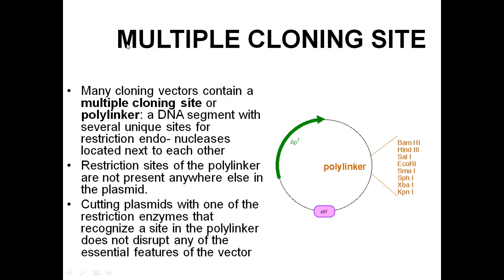Multiple cloning sites are a necessity for the plasmid carrier. The plasmid contains the ampicillin resistance gene, origin of replication, and the multiple cloning site — also called polylinker DNA. There are several restriction sites within the MCS for enzymes such as BamH1, Hind3, Sal1, EcoR1, Sma1, Sph1, Spa1, and Kpn1. Each restriction enzyme recognizes a specific sequence called a restriction site. This region contains restriction sites for all these restriction enzymes, so we can use any of them to cut the plasmid.